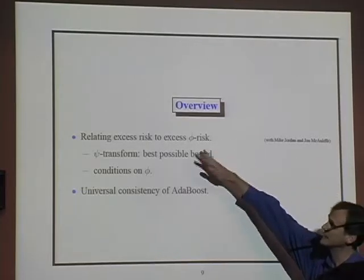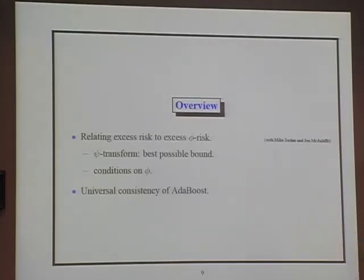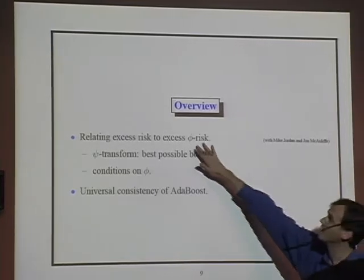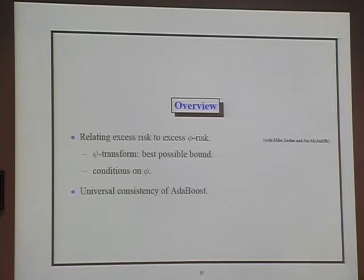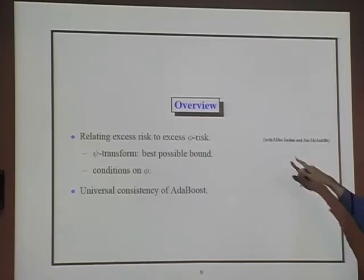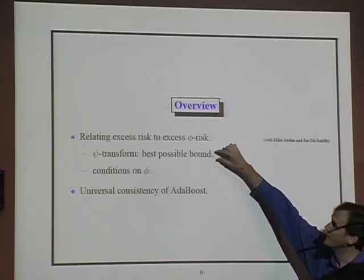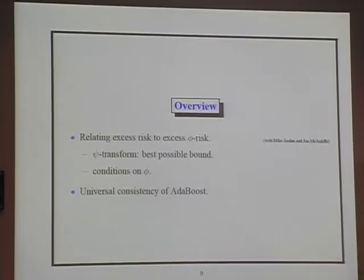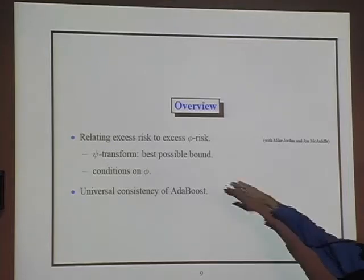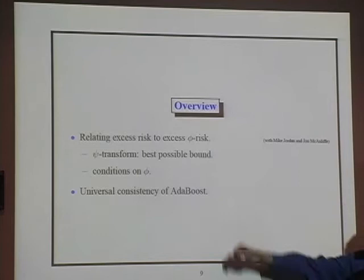The first part reviews the relationship between the risk — the misclassification probability, which is the quantity we care about — and the phi risk, the quantity that these algorithms are actually minimizing. This is joint work with Mike Jordan and John McAuliffe. We'll see a nice, tight relationship between these two quantities, and we can come up with simple conditions on the convex function phi that ensure a useful relationship between them.